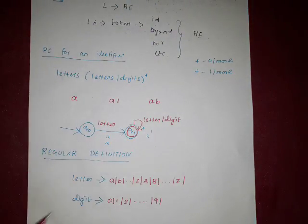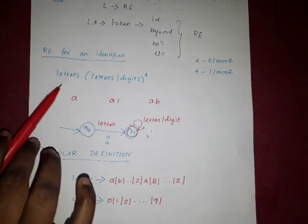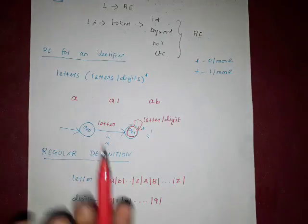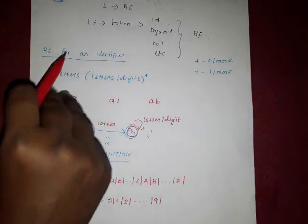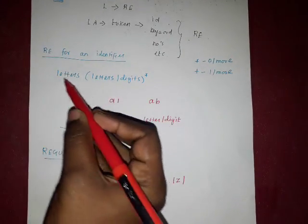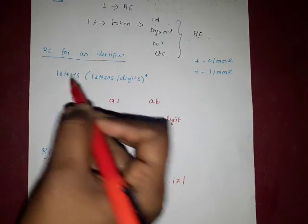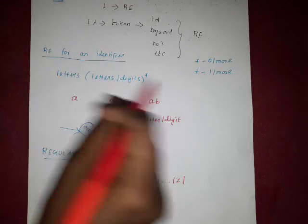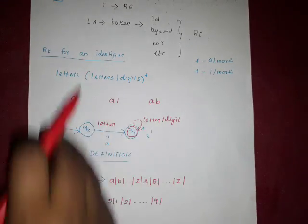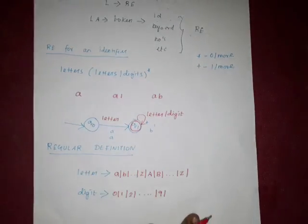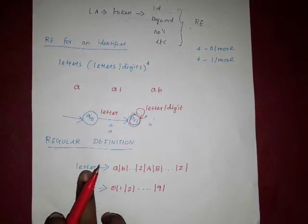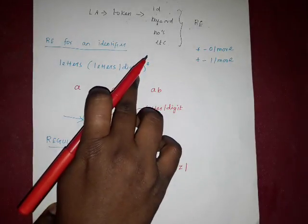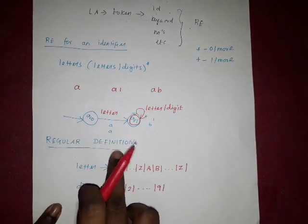This is the regular definition for any particular identifier. An identifier is nothing but letters followed by letters or digits with 0 or more times. Regular definition is nothing but the definitions given to a particular letter. Here we have to write 'letter' and 'digit' — what is a letter and what is a digit. Some definitions are given to them. These are the regular definitions for letter and digit.